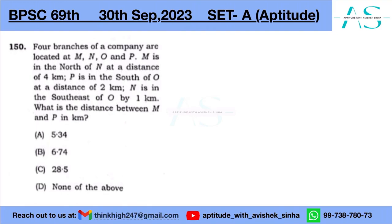An interesting question from Direction Chains. Four branches of a company are located at M, N, O, and P. And what is given? M is in the north of N at a distance of four kilometers.